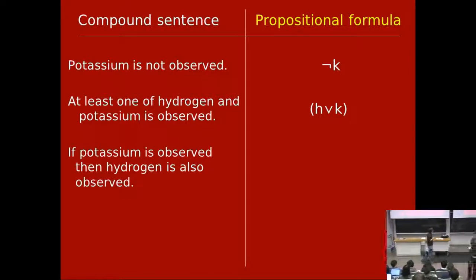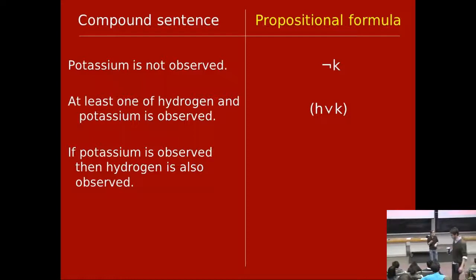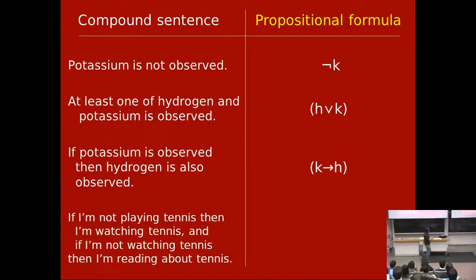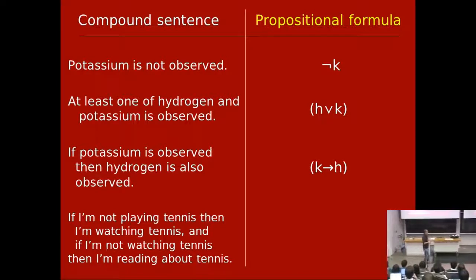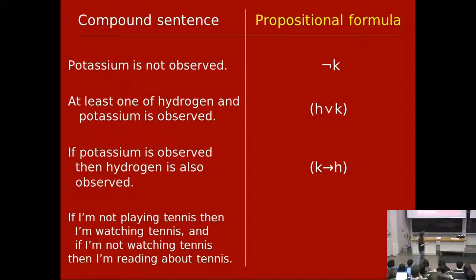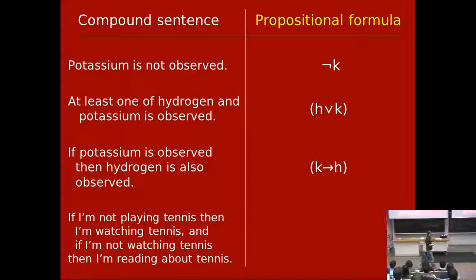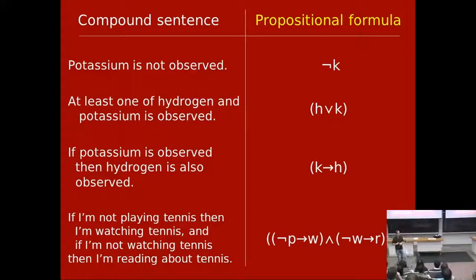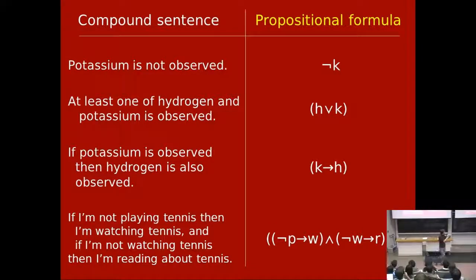'If potassium is observed, then hydrogen is also observed' — K implies H. And here's a slightly longer one relevant since the Australian Open is on right now: 'If I'm not playing tennis, then I'm watching tennis; and if I'm not watching tennis, then I'm reading about tennis.' Using P, W, and R, that would be: not P implies W, and not W implies R. This is how you go from the real world of English sentences to propositional formulas — actual mathematical objects we can reason about.